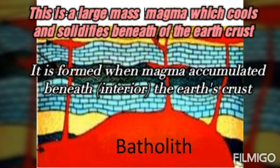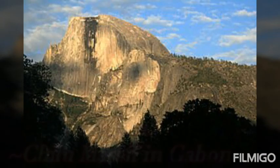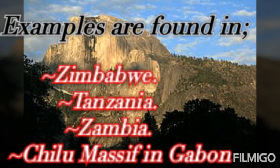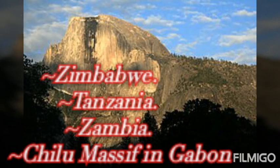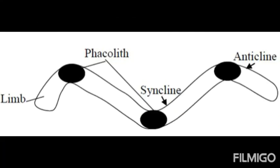The next feature is the batholith. The batholith is a large mass of magma which cools and solidifies deep in the earth's crust. It is formed when magma accumulates beneath the interior of the earth's crust. Examples of batholiths in a geographic area are found in Zimbabwe, Tanzania, Zambia, and Mozambique.